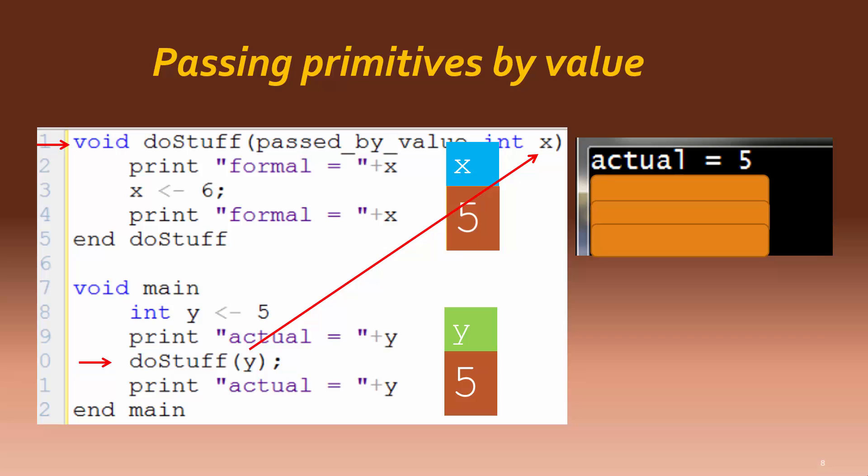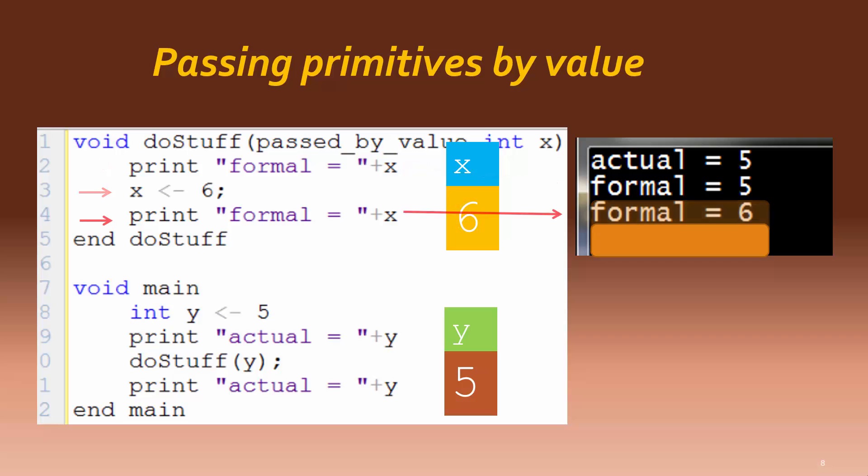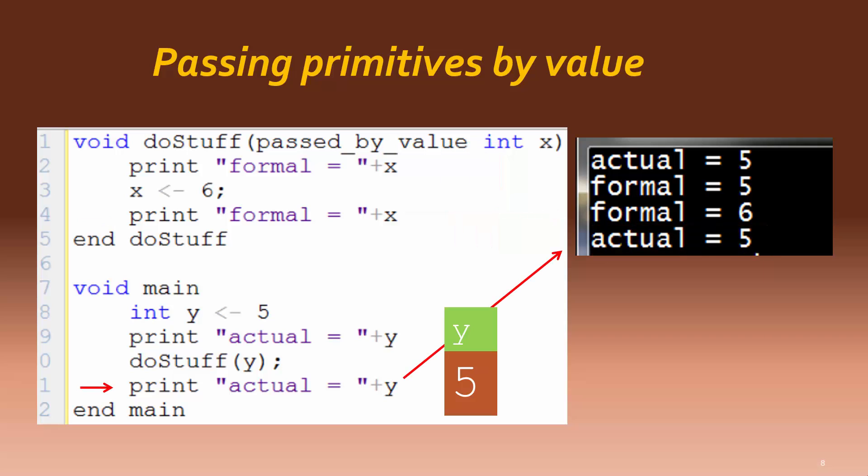The passed by value formal parameter x of the doStuff method receives a copy of the value 5, which is then used in an output statement. The value of x is reassigned to be 6 and is again output. Control then returns to main, where the value of y is output again, still the same as it was before.